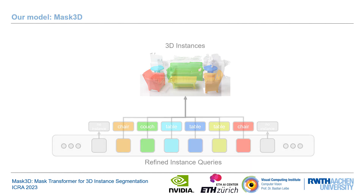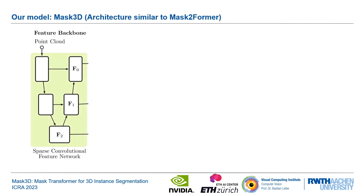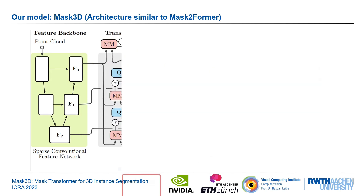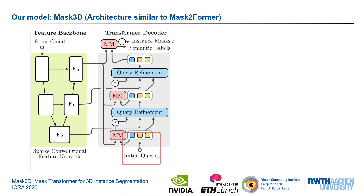We now discuss the overall architecture of Mask3D. We obtain strong multiscale point features from a sparse convolutional backbone. At the core of the model are instance queries, which each should latch onto one instance in the scene and predict the corresponding point-level instance mask.